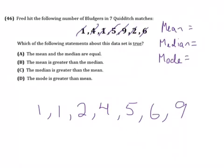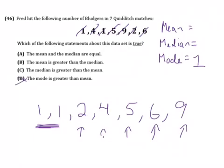Okay, so the mode is the easiest to look at first. Are there any repeating numbers? Well, we have two 1's, and then we have a 2, a 4, a 5, a 6, and a 9. So the mode is 1. Now, choice D says the mode is greater than the mean. Well, if the mode is 1, unless the mean is less than 1, which wouldn't make sense for this data, choice D is probably not correct.